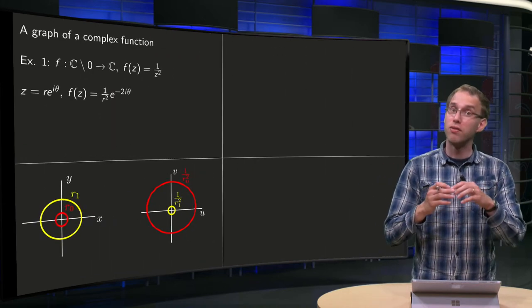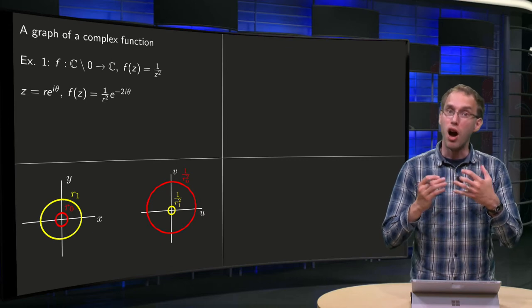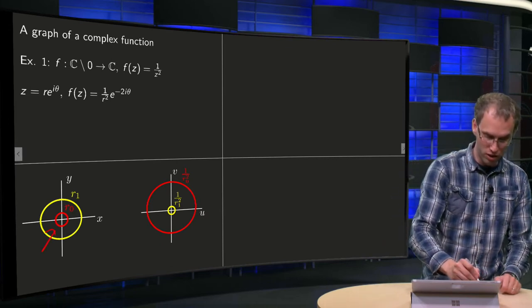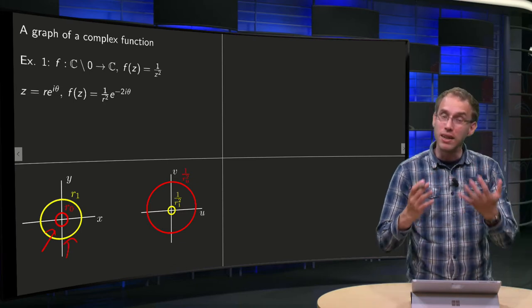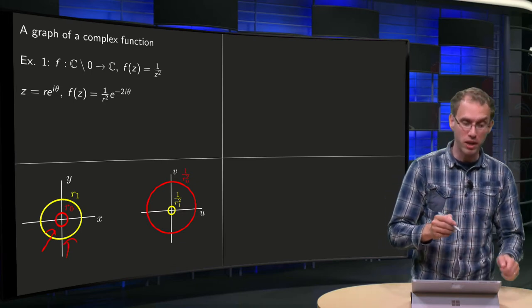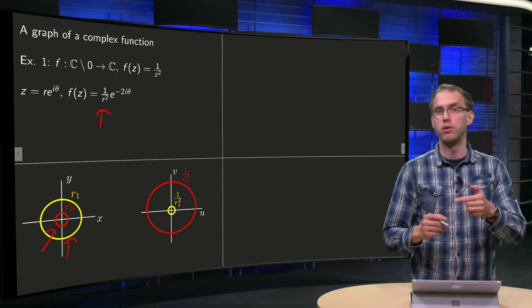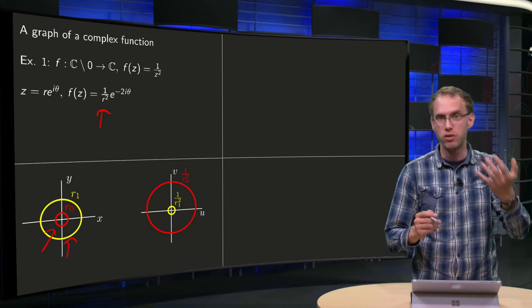So that means that if you look at circles where your r is constant in the domain, you get circles with radius r0 or r1, and in the codomain you also get circles but now with radius 1/r², and while you traverse them in the other direction and twice as fast.